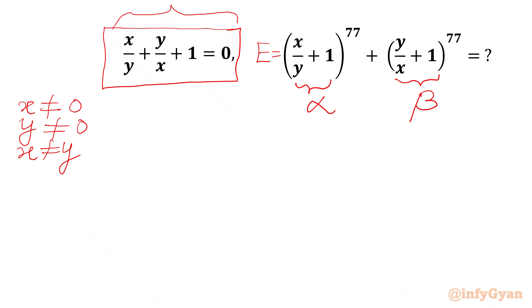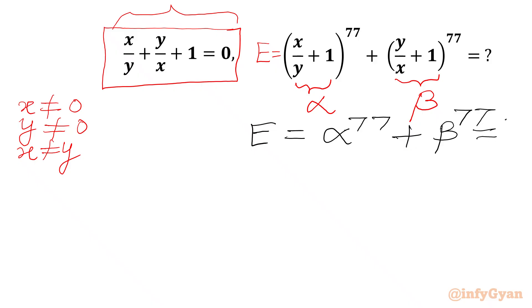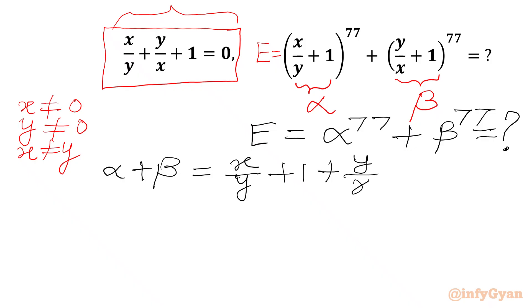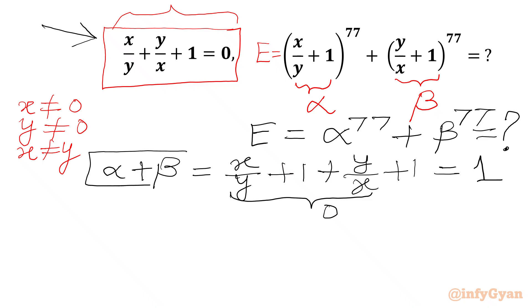So our required expression in terms of alpha and beta is alpha^77 + beta^77. Now we will calculate alpha + beta. This equals (x/y + 1) + (y/x + 1). As per the given equation, x/y + y/x = 0, so alpha + beta = 0 + 1 + 1... that gives us alpha + beta = 1.